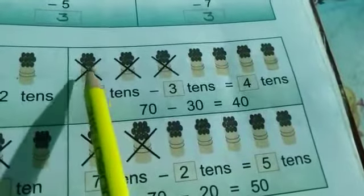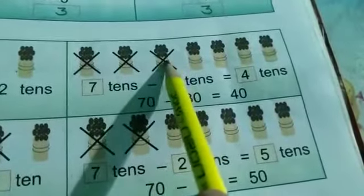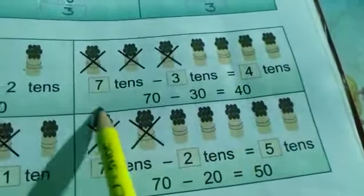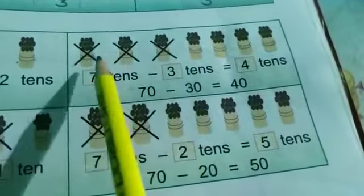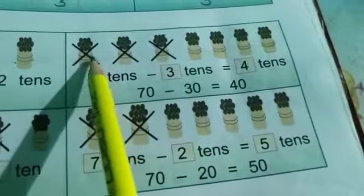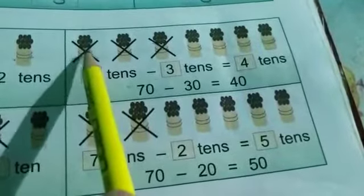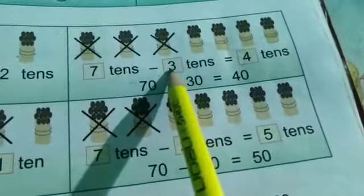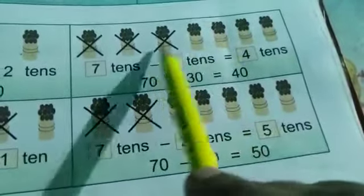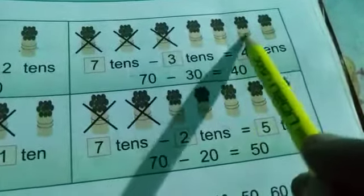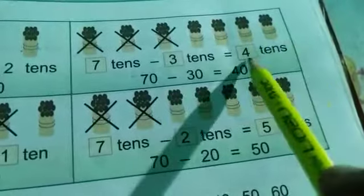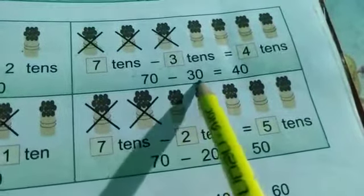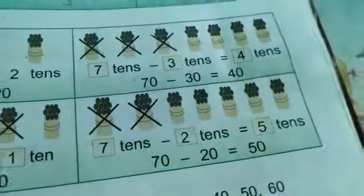We are having 7 tenths — 1, 2, 3, 4, 5, 6, 7. From 7 tenths, how many tenths have we minused? We have crossed out 3 tenths — 1, 2, 3. So how many are left? 7 minus 3: 1, 2, 3, 4 — 4 tenths. So 7 tenths means 70 minus 30 equals 40.